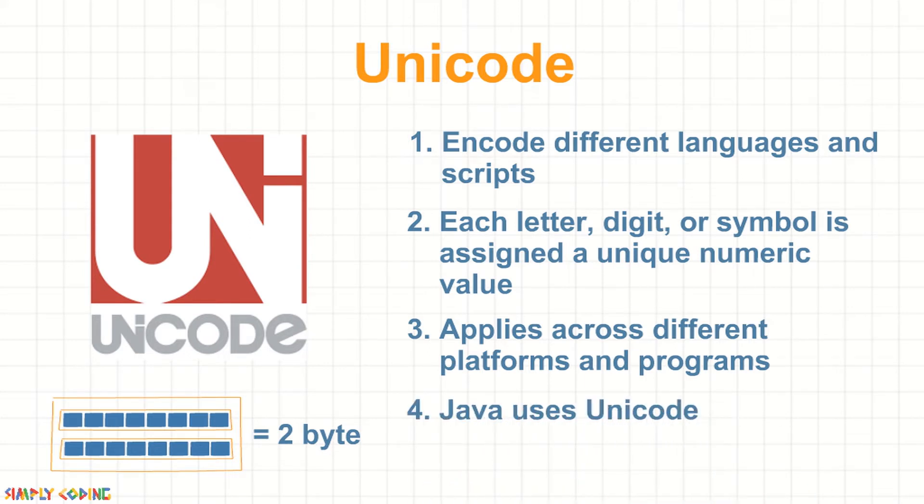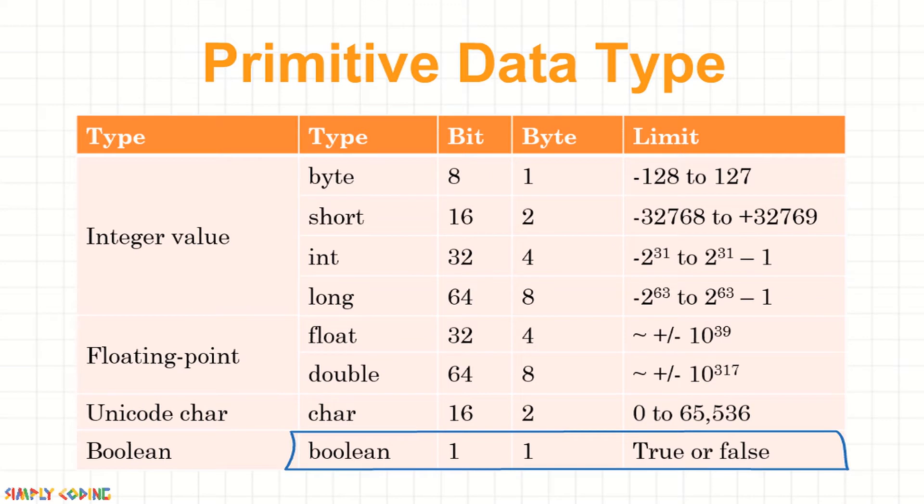Java uses Unicode. Next is Boolean which has 8 bits or 1 byte of storage but stores only value of true and false.